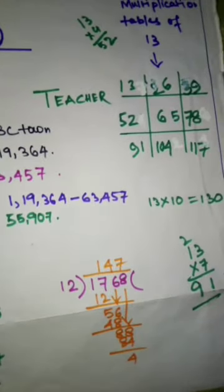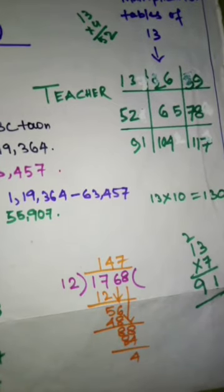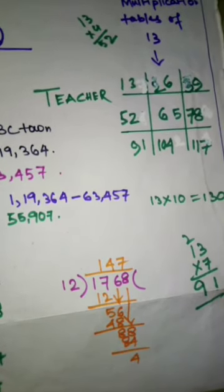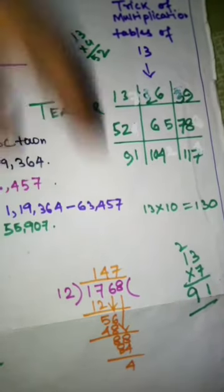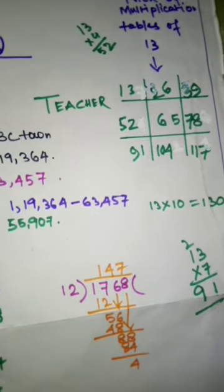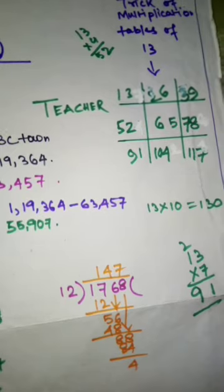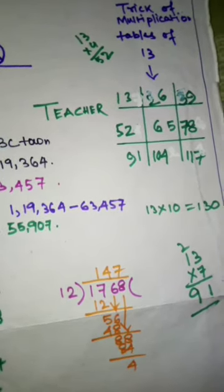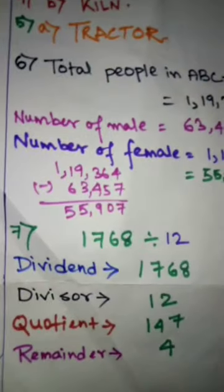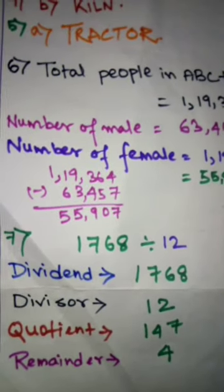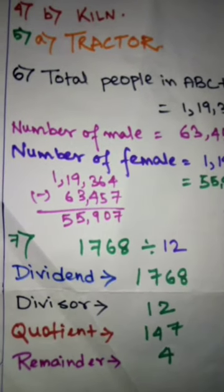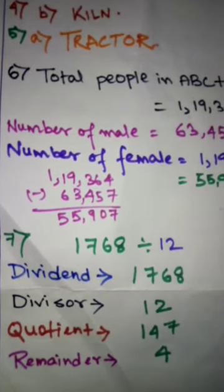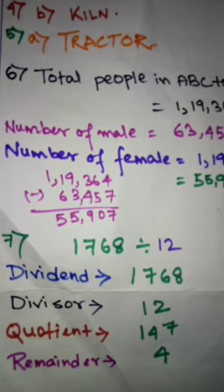In order to find the quotient and remainder, you need to divide 1,768 by 12. After the division, you get 147 as the number of times that you multiply 12 and the remainder value is 4. So when you write out the dividend is 1,768, divisor 12, the quotient value is 147 and the remainder value is 4.